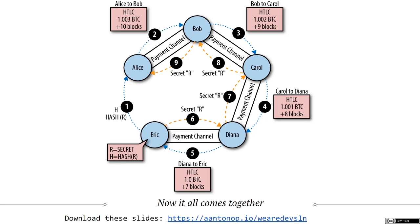Eric can communicate this to Alice over any network — a Lightning invoice containing this hash and the amount can be transmitted over Twitter, Skype, text message, or whatever you want. It's encoded using a Bech32 encoding and starts with the letters LN so you know it's an invoice for the Lightning Network.